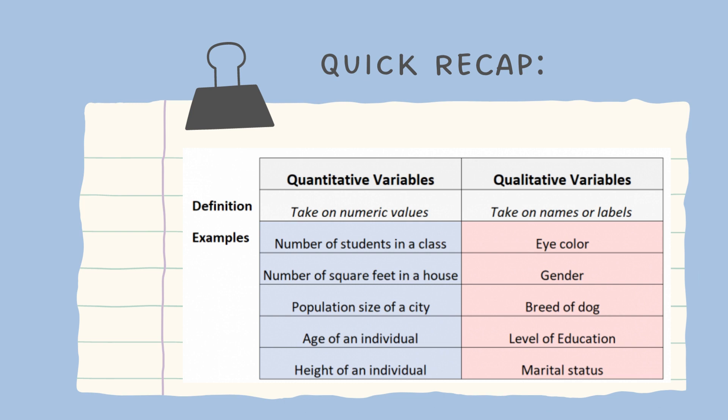Qualitative variables take on names or labels such as eye color, gender, breed of dog, level of education, and marital status.